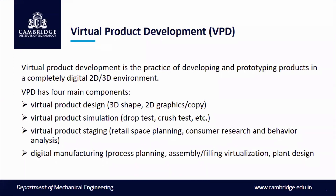There are so many components — here we mention around three to four components — but there are many more in terms of virtual product development and newest innovation technologies. The main important components of virtual product development are: virtual product design in 3D or 2D shape, virtual product simulation including drop test and crush test, virtual product staging including retail space planning and consumer research and behavior analysis, and digital manufacturing including process planning, assembly, building, virtualization, and plant design.